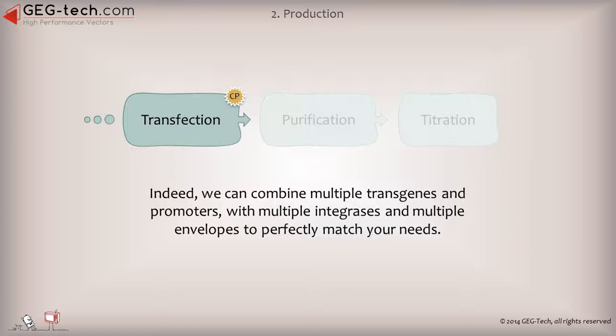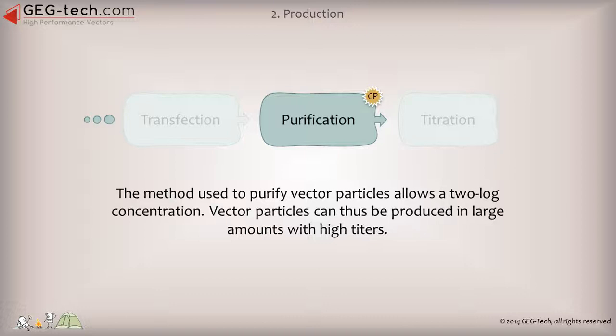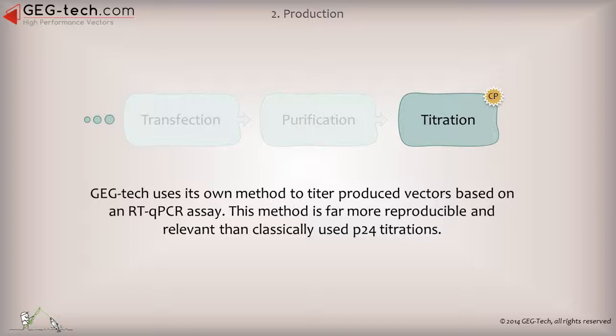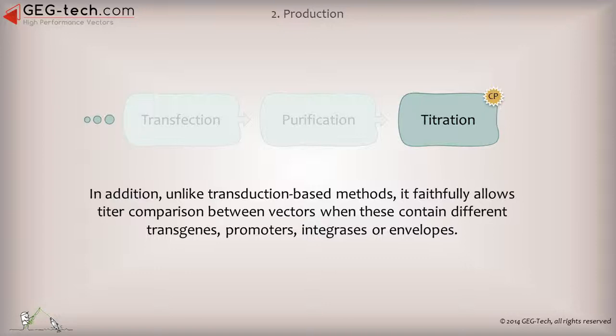The method used to purify vector particles allows a two-log concentration. Vector particles can thus be produced in large amounts with high titers. GEG Tech uses its own method to titer vectors based on an RT-Q-PCR assay. This method is far more reproducible and relevant than classically used P24 titrations. In addition, unlike transduction-based methods, it faithfully allows tighter comparison between vectors when these contain different transgenes, promoters, integrases, or envelopes.